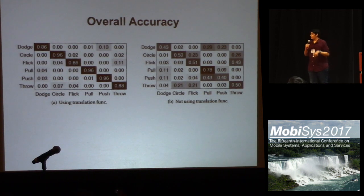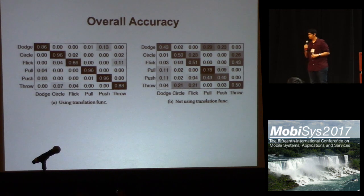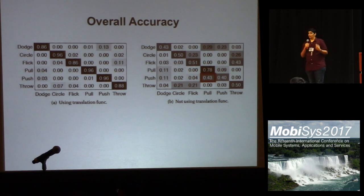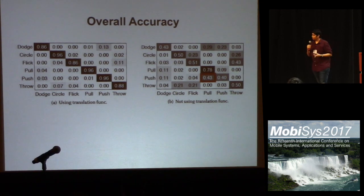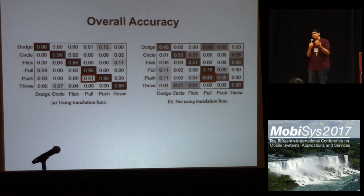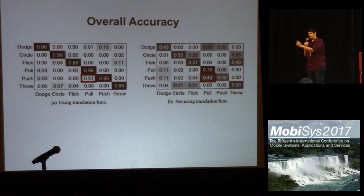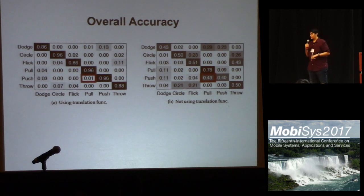Let us see how it performs. This figure shows the comparison when we use the translation function versus when we don't. Without the translation function, push gestures are being incorrectly recognized because a push gesture in one configuration can appear as a pull gesture in another configuration. This causes significant misclassification. You can also observe that the confusion matrix diagonal is darker when we use the translation function, while errors are spread all over when we do not.